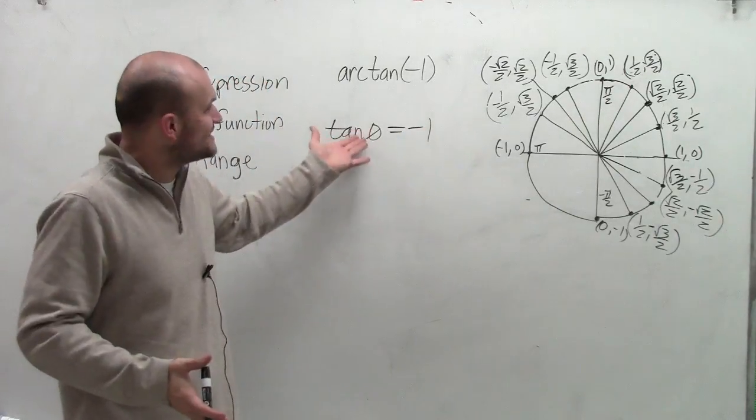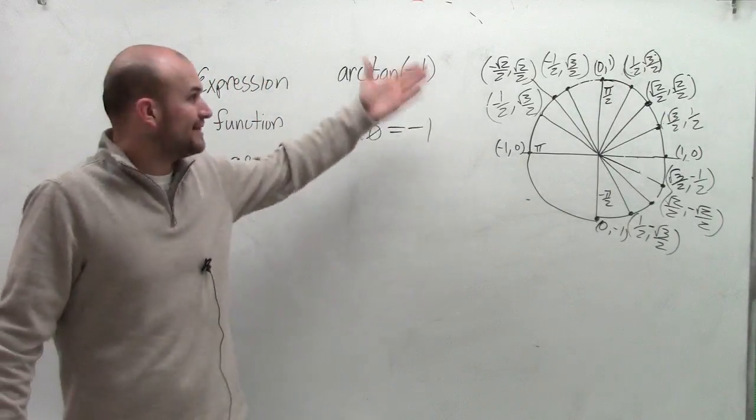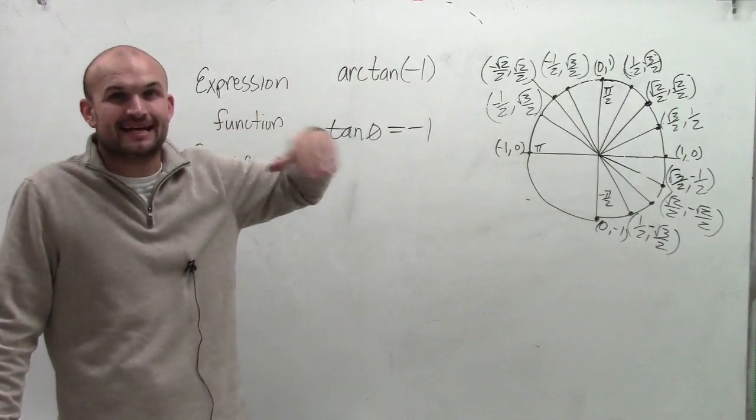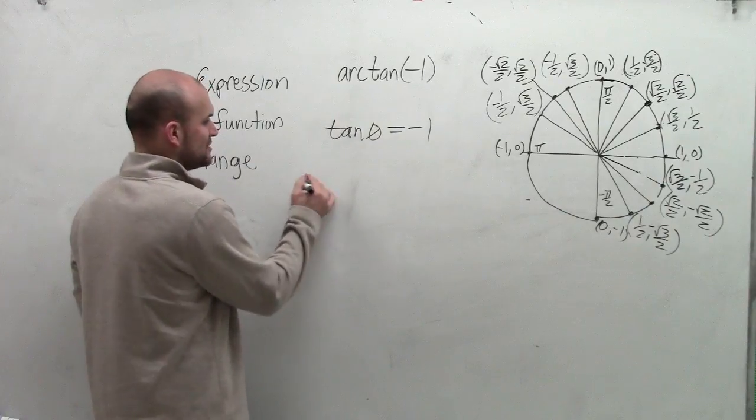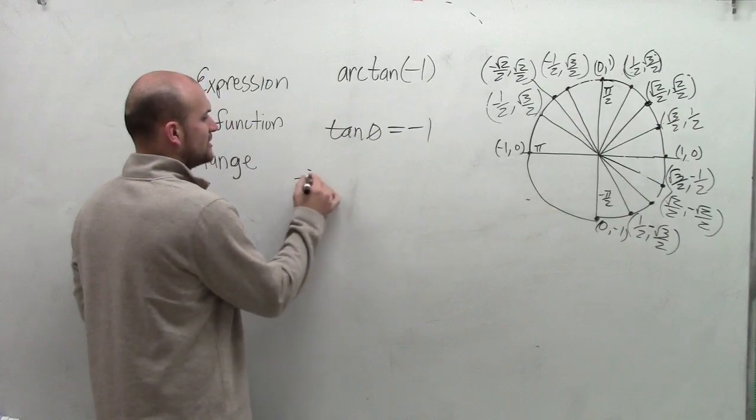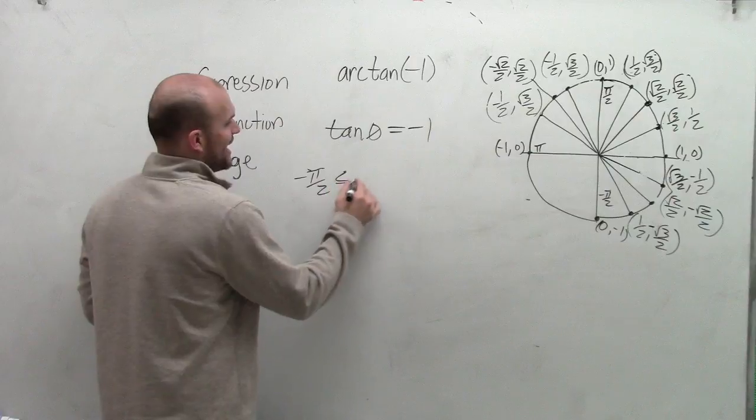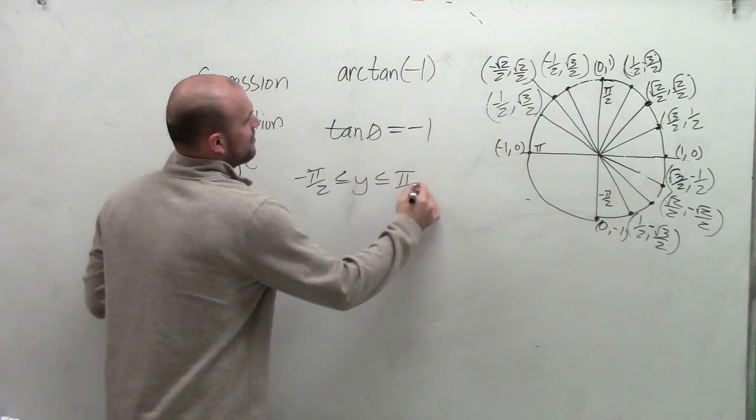So what angle, when I take the tangent of it, is equal to negative 1? That's essentially what the arctan is asking us to find. We need to make sure when taking the inverse tangent that our function falls within the range of negative pi over 2 and positive pi over 2.